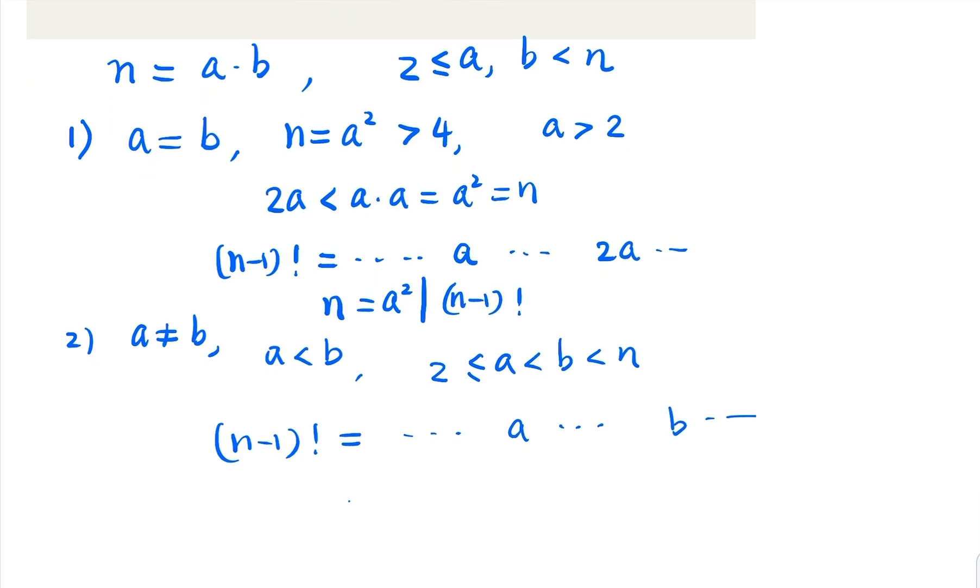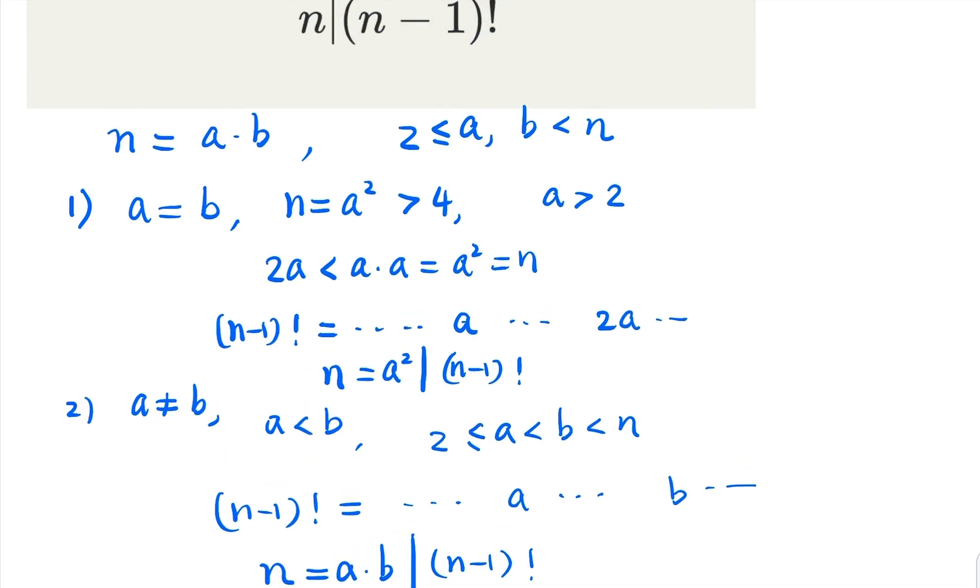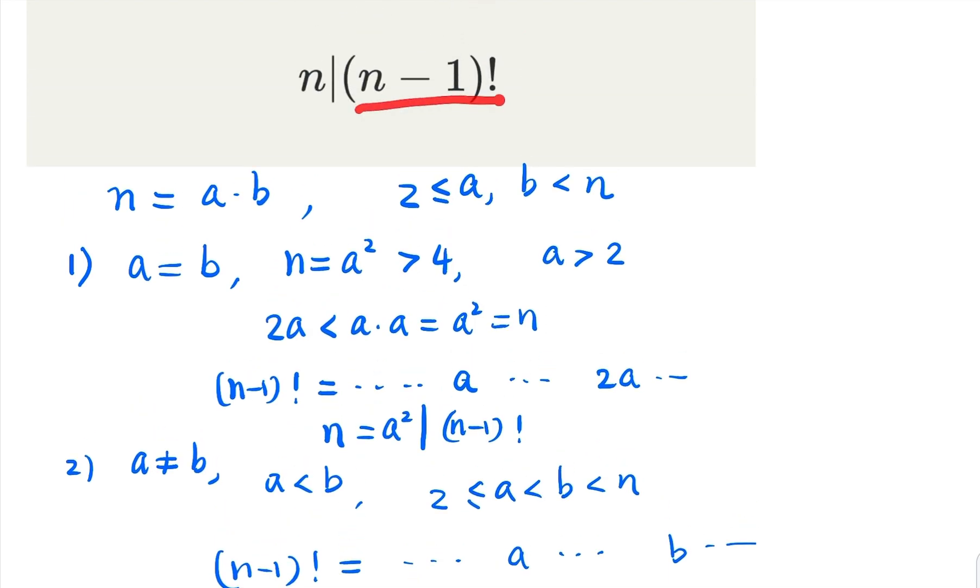And of course, which means a and b, the product, divides (n-1) factorial. And of course, what is a times b? That's n. So in this case, we have shown that (n-1) factorial is a multiple of n.